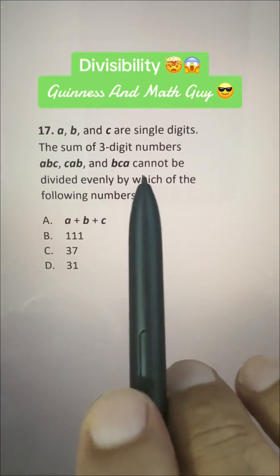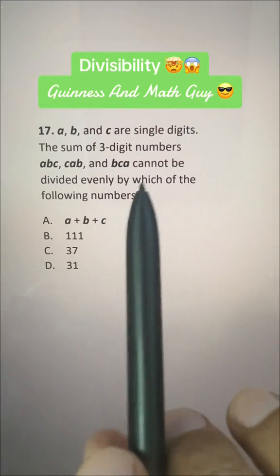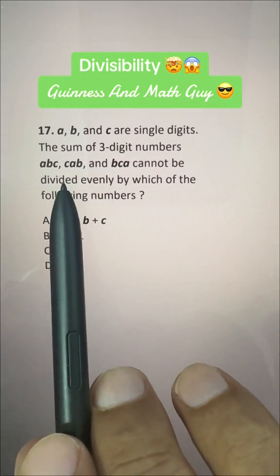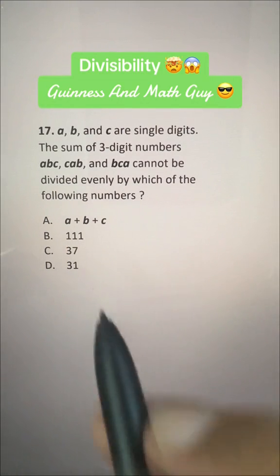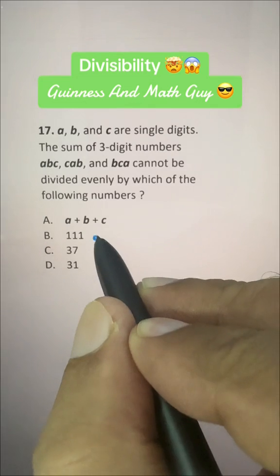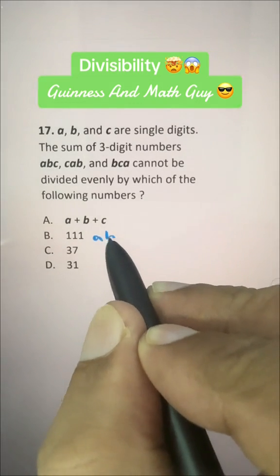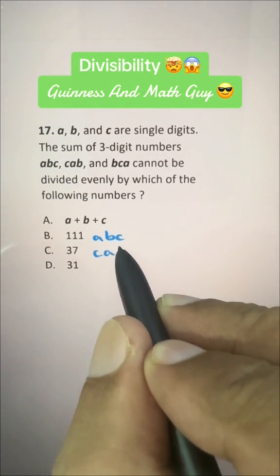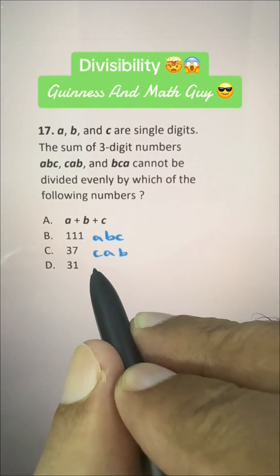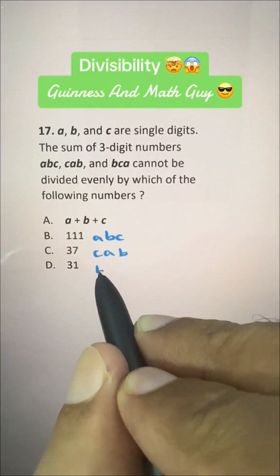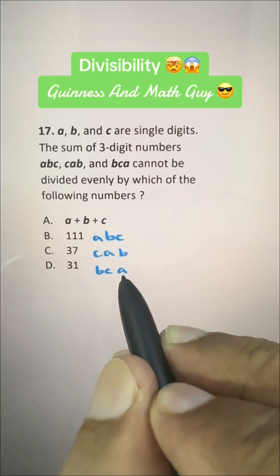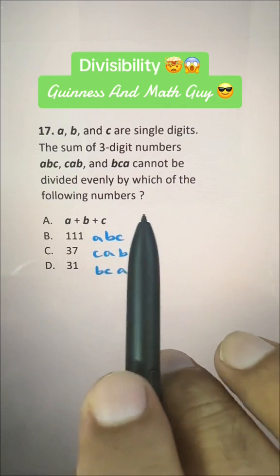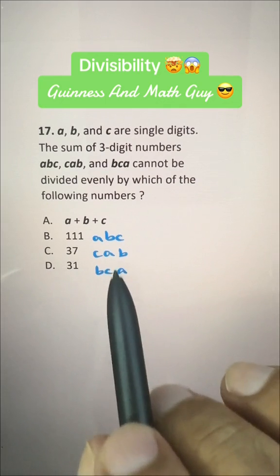A, B, and C are single digits. The sum of three-digit numbers ABC, CAB, and BCA — let's write it like this: ABC, then CAB, and then BCA — cannot be divided evenly by which of the following numbers? Let's do the sum.